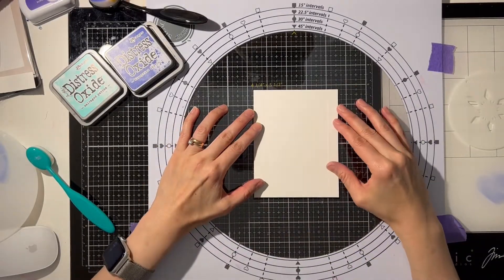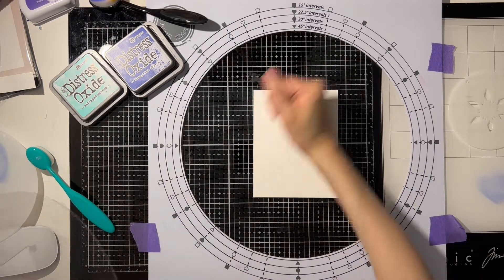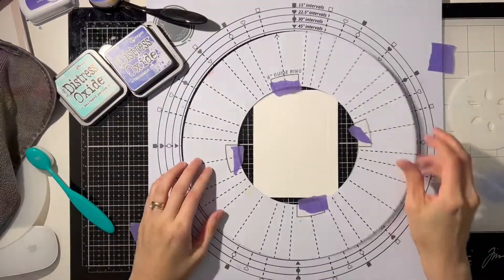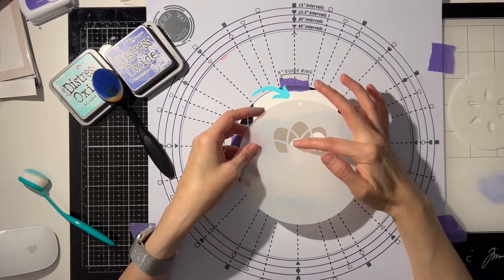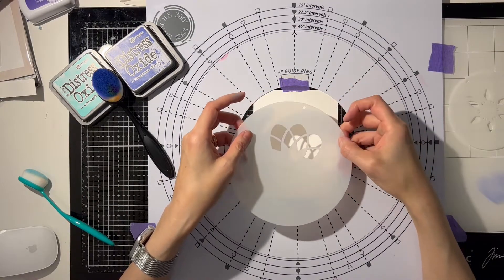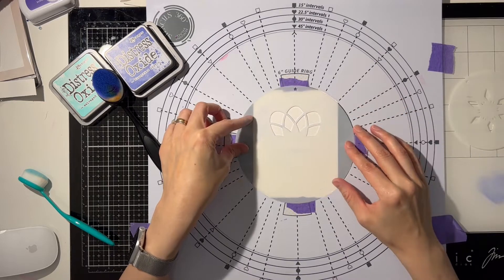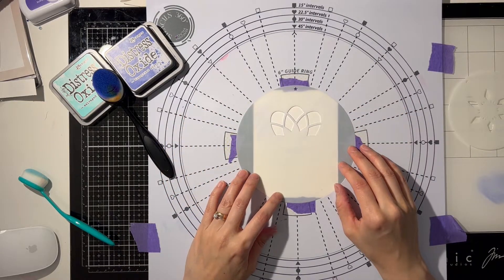First, I use the A2 size paper guide to center my four and a quarter by five and a half cardstock, then I replace it with a six inch guide ring. As you can see, this stencil has a star as the alignment marker, which means I can try different turning intervals to achieve different looks.